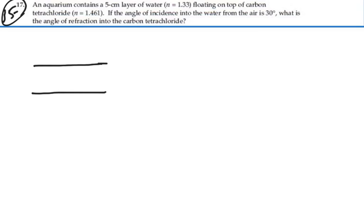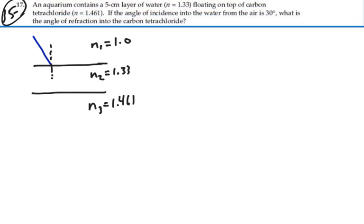Let's imagine what we've got here. We've got a layer of water, and we're going from air — that'll be our first index, 1.0 — to water, which is 1.33, to carbon tetrachloride, which is 1.461. We have a ray coming in with an angle of incidence of 30 degrees. It's going to refract towards the normal, as we're going from a lower index to a higher index. Then it's going to hit the carbon tetrachloride and refract towards the normal again, because we're going from a lower index to a higher index in each case.